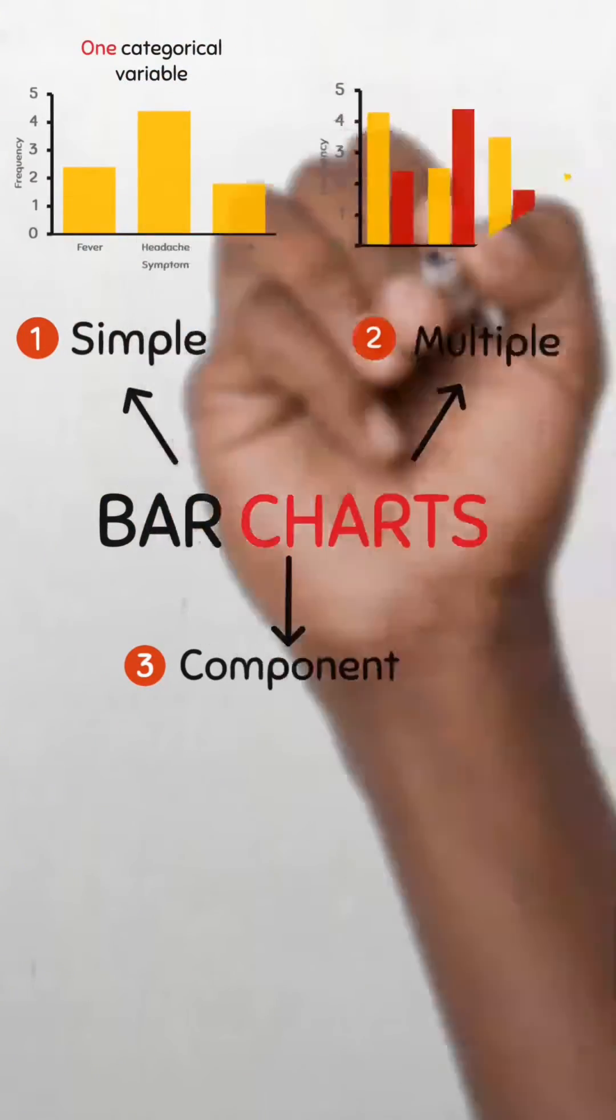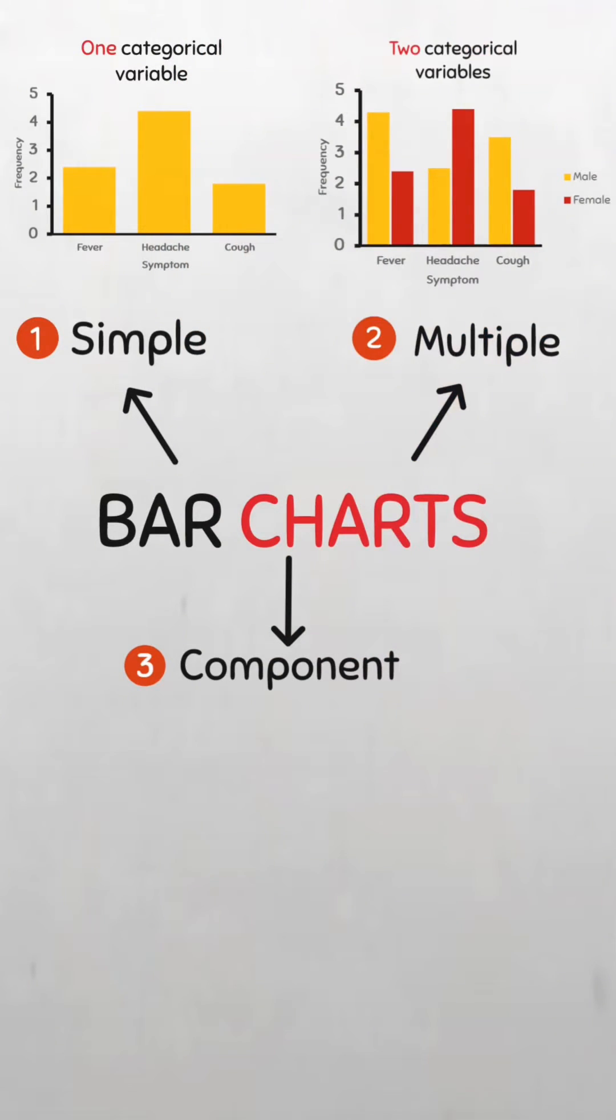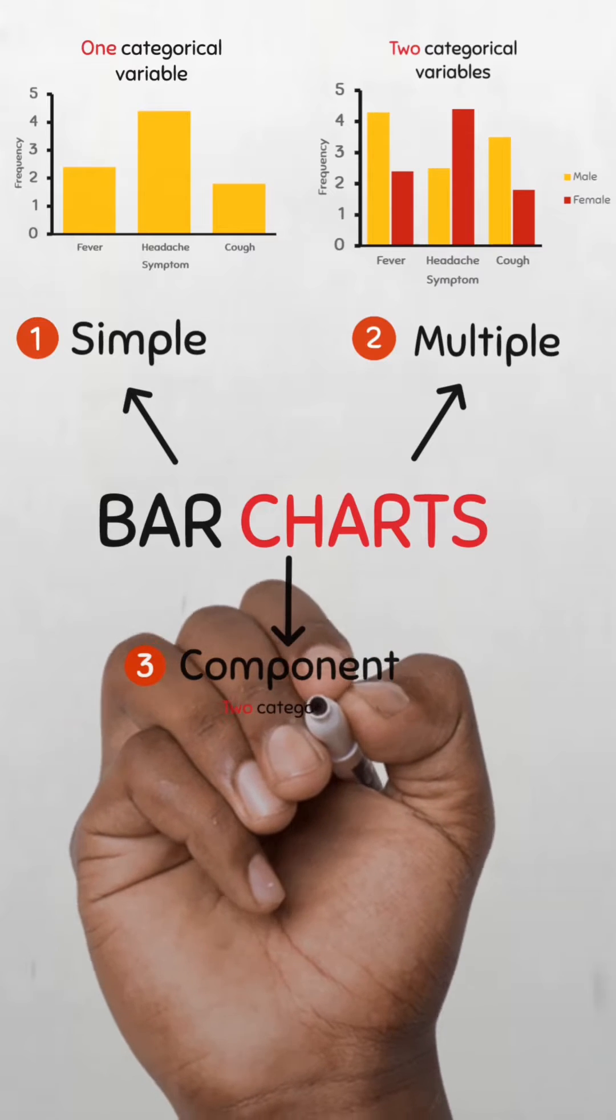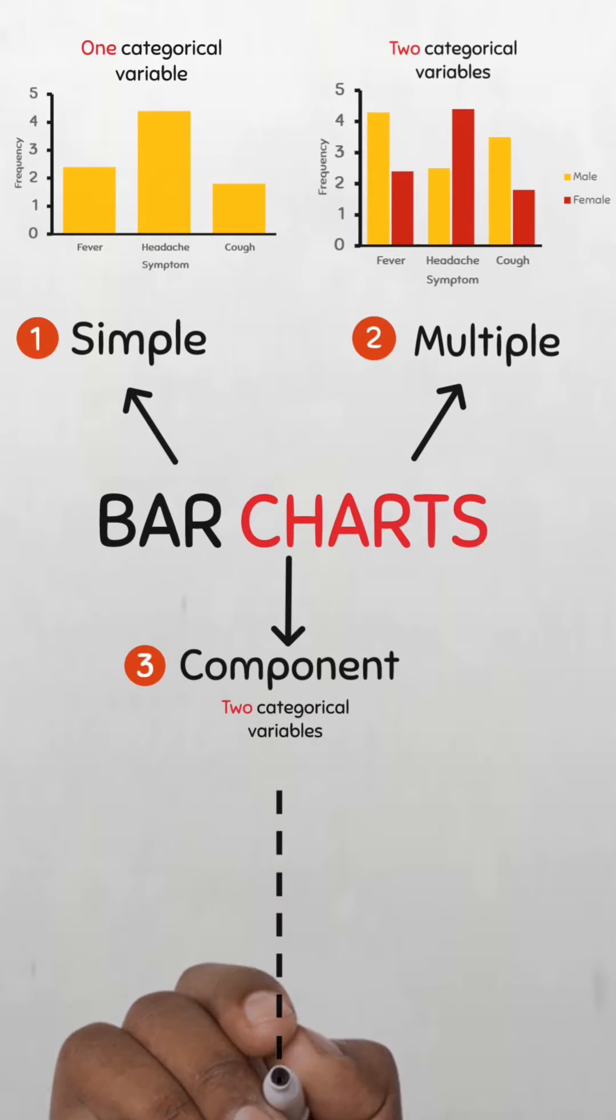The multiple bar chart is used for comparing data of two categorical variables and component bar charts. This is also used to represent two categorical variables. There are two types of component bar charts.